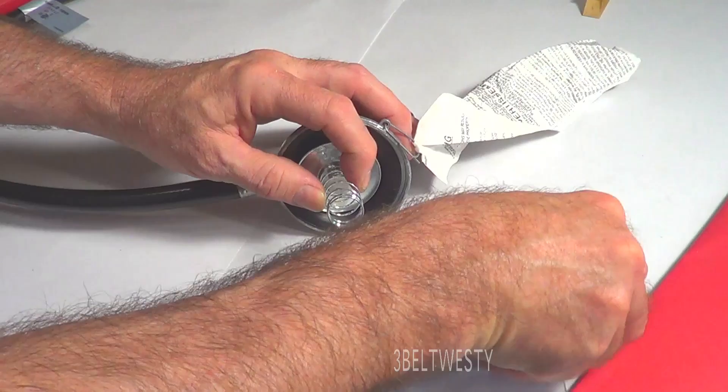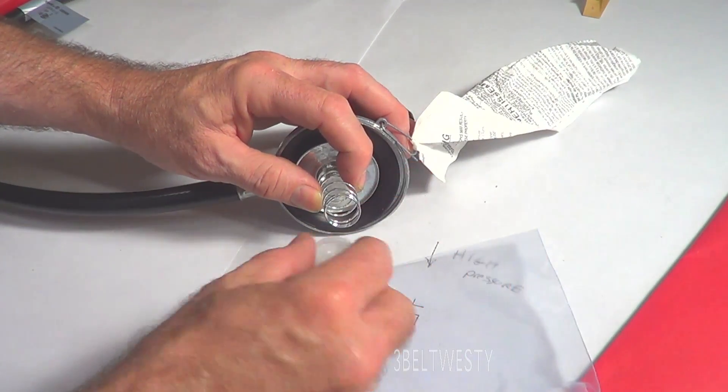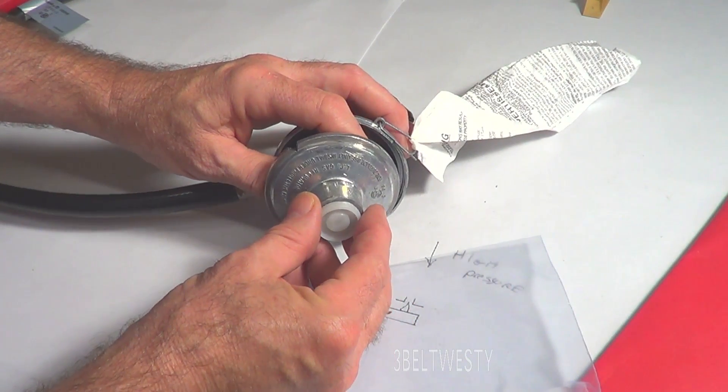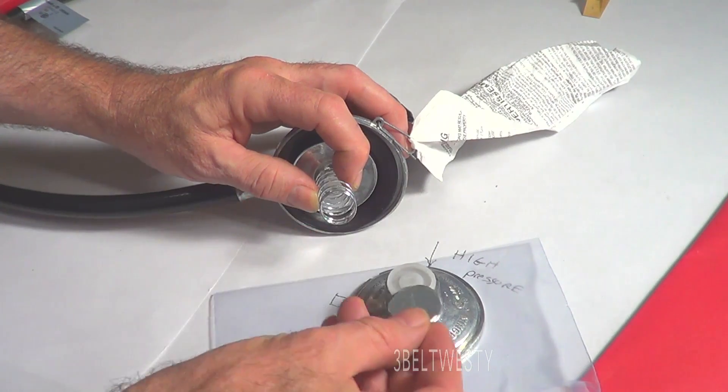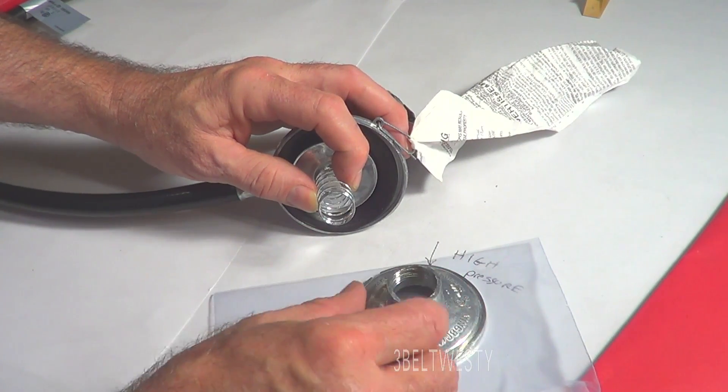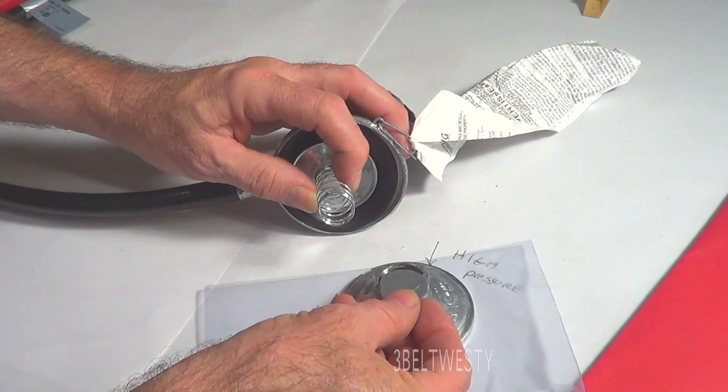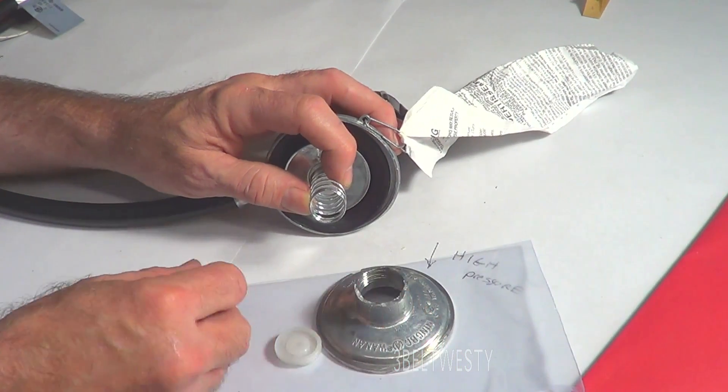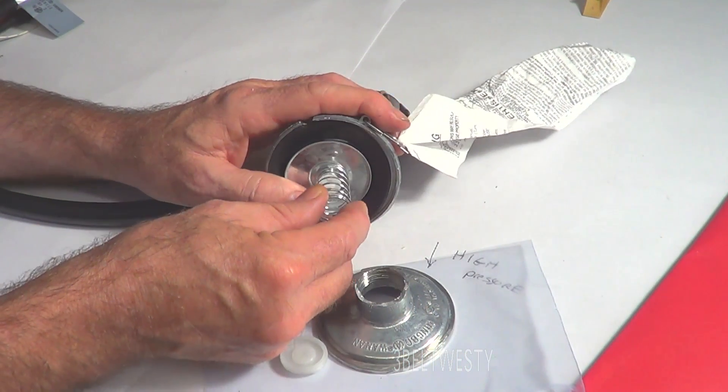This is the adjusting screw that's buried underneath the hidden top. The cheap models just have a physical top on here that you can't get at. A better one has an adjustment—they adjust this at the factory, then they put the plug in and seal it.